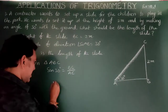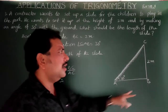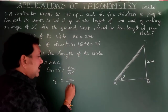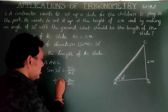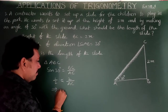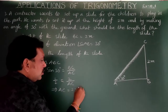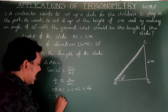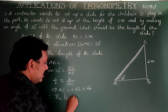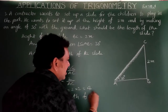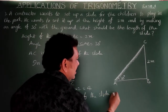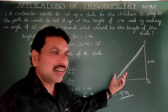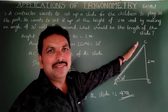sin 30° = 1/2 = BC/AC = 2/AC. Cross multiplying, AC = 2 × 2 = 4. Therefore, the length of the slide is 4 meters. The contractor should construct a 4-meter slide to have it at a height of 2 meters.